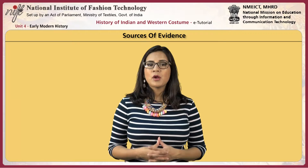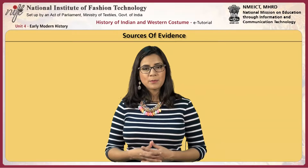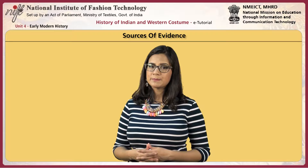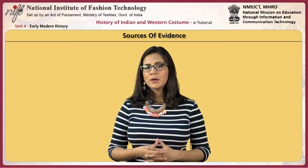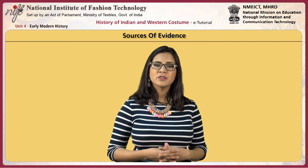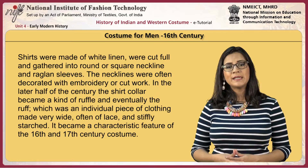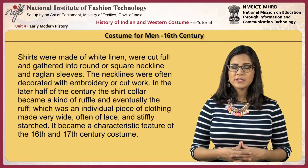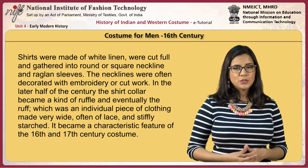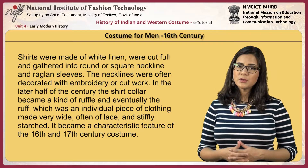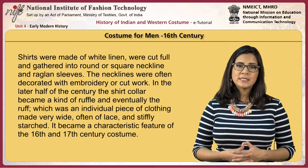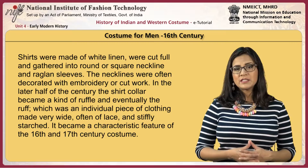Art is the primary source of information about what people wore. Portraits, drawings and tapestries abound among the possessions of wealthy merchants and upper class citizens. Other sources include books about costumes that were published, documentary sources from royal household inventories, and actual garments that have survived from the 16th century. The main costumes for men during the 16th century were shirts, made of white linen and cut full and gathered into round or square necklines with raglan sleeves. The necklines were often decorated with embroidery or cut work. During the later half of the century, the shirt collar became a kind of ruffle and eventually the ruff, which was an individual piece of clothing made very wide, often of lace and stiffly starched. It became a characteristic feature of the 16th and 17th century costume.